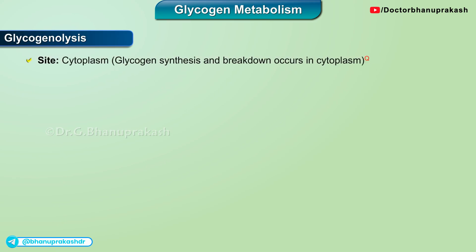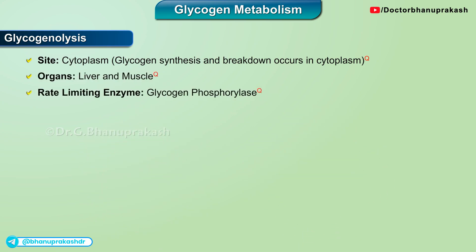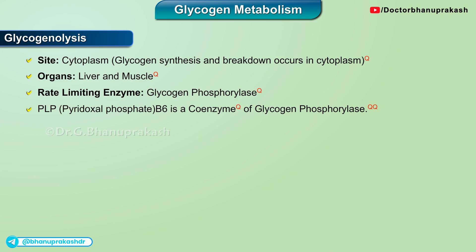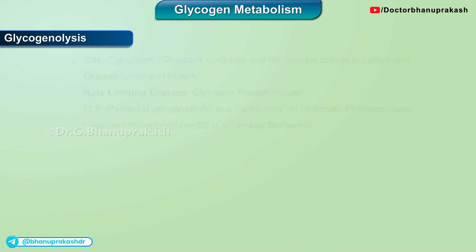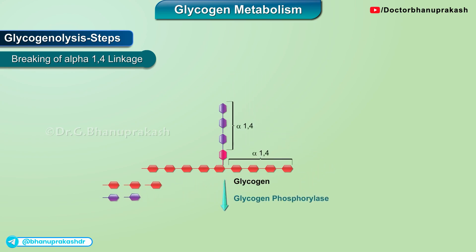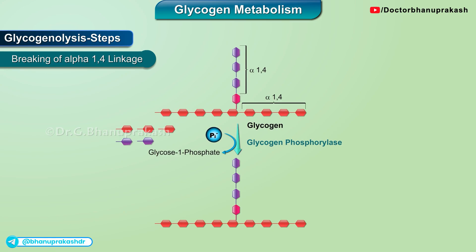Glycogenolysis. The site is cytoplasm; both glycogen synthesis and breakdown occur in the cytoplasm. Organs are liver and muscle. The rate-limiting enzyme is glycogen phosphorylase. Pyridoxal phosphate B6 is a coenzyme of glycogen phosphorylase. Glycogen phosphorylase BB is a cardiac biomarker. Major pathway of glycogenolysis steps: breaking of alpha-1,4 linkage. Glycogen phosphorylase cleaves the alpha-1,4 linkage and releases glucose-1-phosphate, not free glucose. Glycogen phosphorylase stops its action at least 4 glucose residues from a branch point.